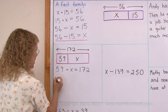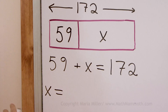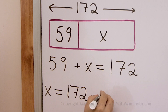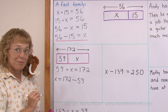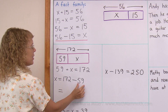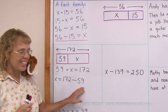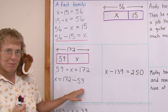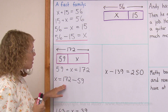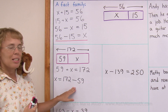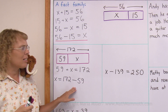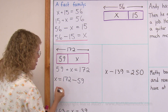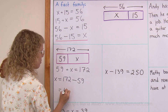We take the total, 172, and subtract 59. You can subtract 60 instead — it's like a helping problem, an easier problem. So 172 minus 60 would be 112. But when we subtract 60, we're subtracting 1 too much, so the answer is actually one more than 112. It is 113.